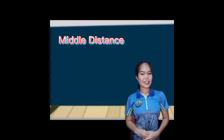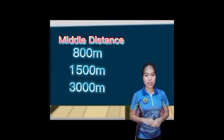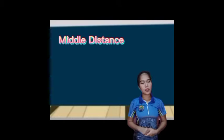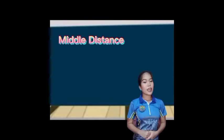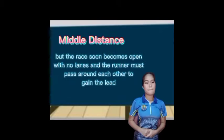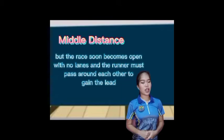We also have the middle distance. The middle distance races are 800-meter, 1,500-meter, and 3,000-meter. These races require different skills and tactics to win. They rely more on endurance and pacing than just pure speed. Also, the runners don't stay in a single lane for the entire race. They start out in staggered lanes to make the distance the same for each runner, but the race soon becomes open with no lanes and runners must pass around each other to take the lead.